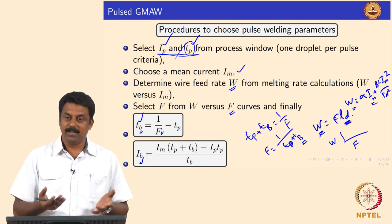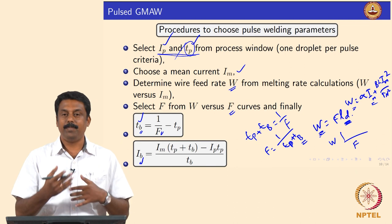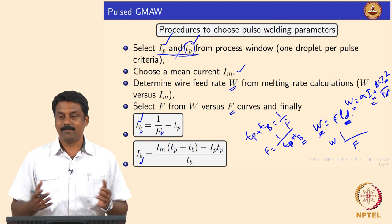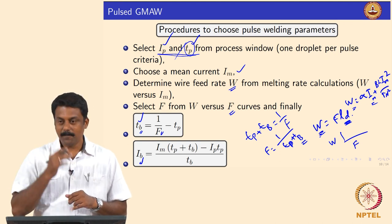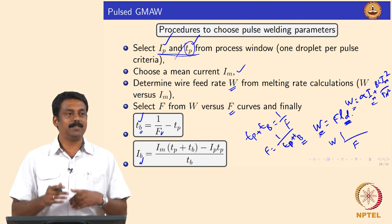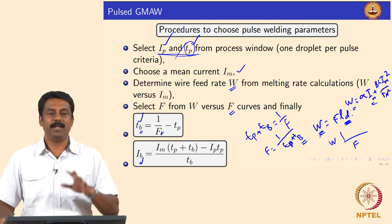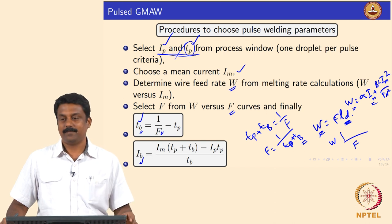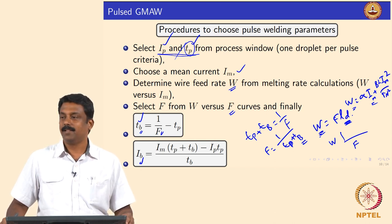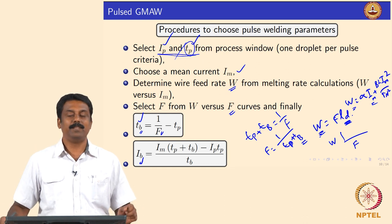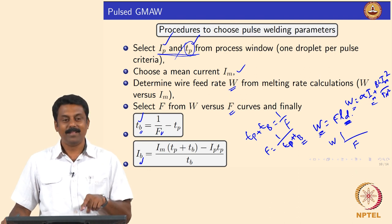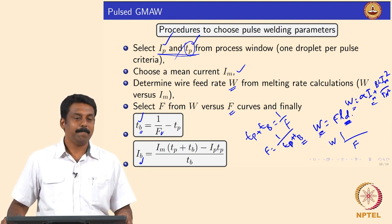Once IP, TP, W, F, and TB are known, only IB remains, calculated from the average current equation. All the parameters needed for pulsing are then determined. The power source can then feed all the parameters and wire feed rate to achieve droplet transfer in spray mode at a constant arc length.